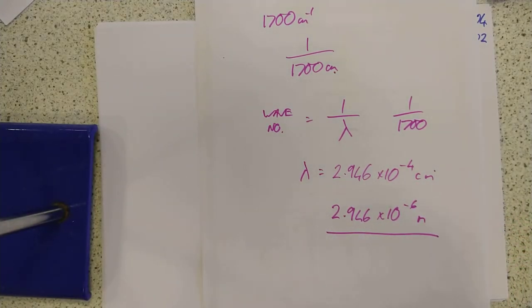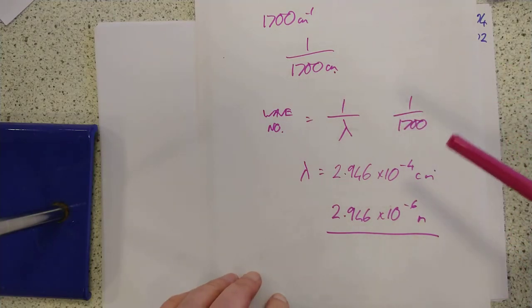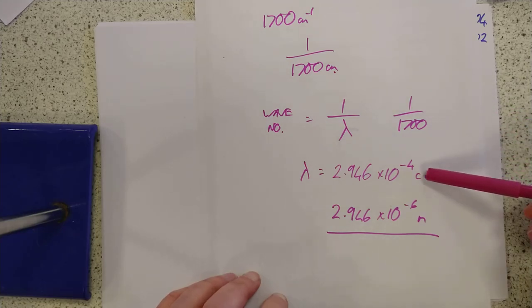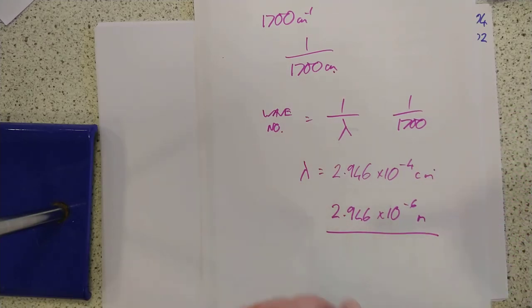It's just one mark, that, but it's easy to make a mistake. As you saw, I nearly made a mistake first. So a quick recap there. Do the reciprocal, flip it first. That gives you the wavelength in centimeters, and lastly, change it into meters.